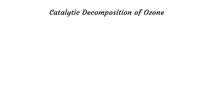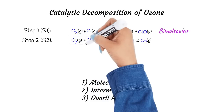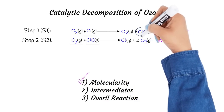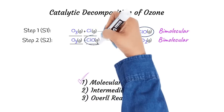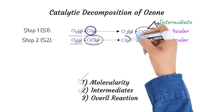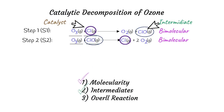For our final example, let's consider the following reaction mechanism. There are two reactants, O3 and Cl, involved in step 1, so the first step is a bimolecular reaction. In step 2, again there are two reactants involved, O3 and ClO, so we call step 2 a bimolecular reaction. Here, ClO is produced in step 1 and gets consumed in step 2, so it is an intermediate of this reaction. Cl is used in step 1 and regenerated in the following step, so we call Cl a catalyst in this reaction. A catalyst is a chemical species that participates in a chemical reaction and increases the reaction rate, but is not consumed during the reaction.